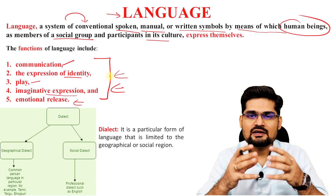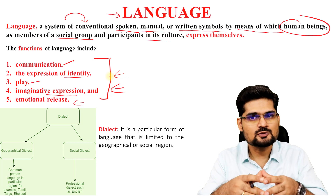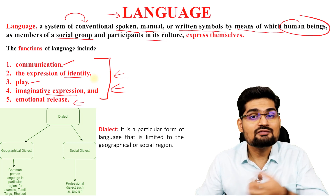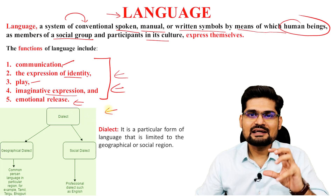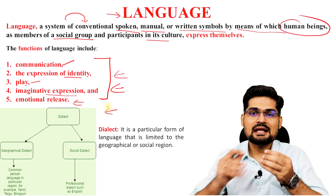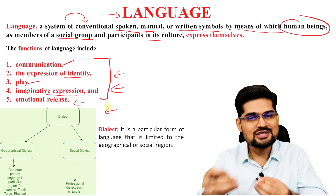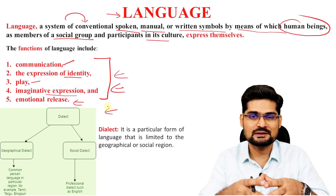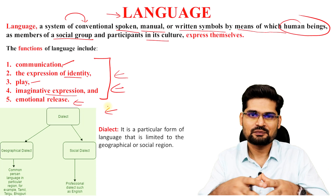Now when we understand language as a concept — its functions and its attributes — what is important is how it is associated with geography and geographical concepts. If you observe carefully, you'll find there is a spatial pattern of languages in the world. Language changes from location to location, and when there is a locational, spatial aspect in language, it becomes purely a human geography concept.